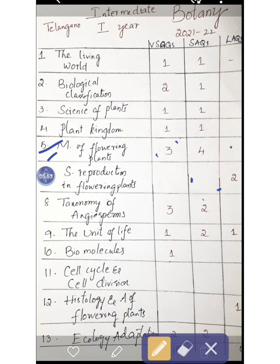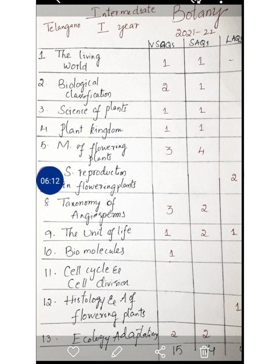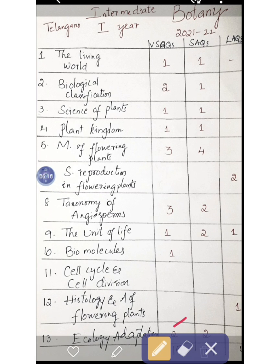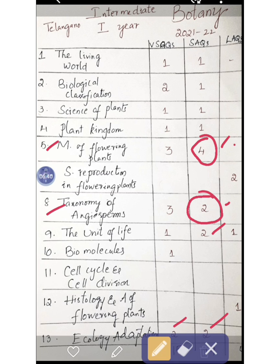Chapter-wise very short answer distribution: Chapter 1 — one, Chapter 2 — two, Chapter 3 — one, Chapter 4 — one, Chapter 5 — three, Chapter 7 and Chapter 8 — three, Chapter 9 — one, Chapter 10 — one, last chapter — two. Overall 15 questions. For revision, give priority first to Chapter 5, then Chapter 8. From Chapter 5 — four short answers, Chapter 8 — two, Chapter 9 — two, last chapter — two, totaling ten questions you can attempt.